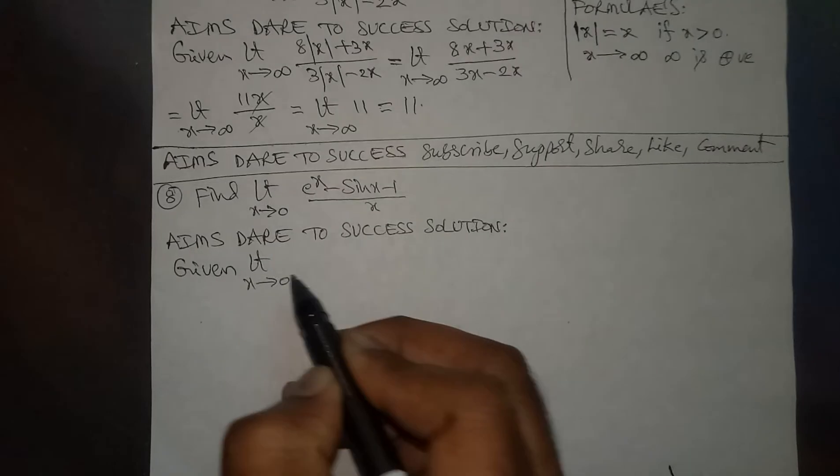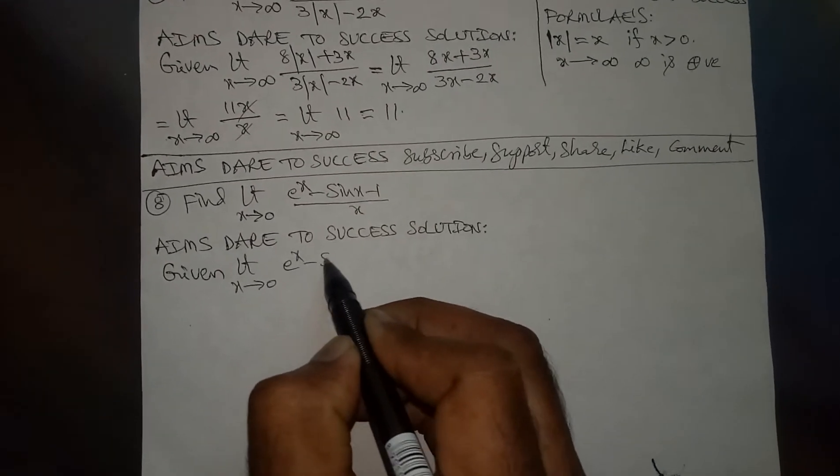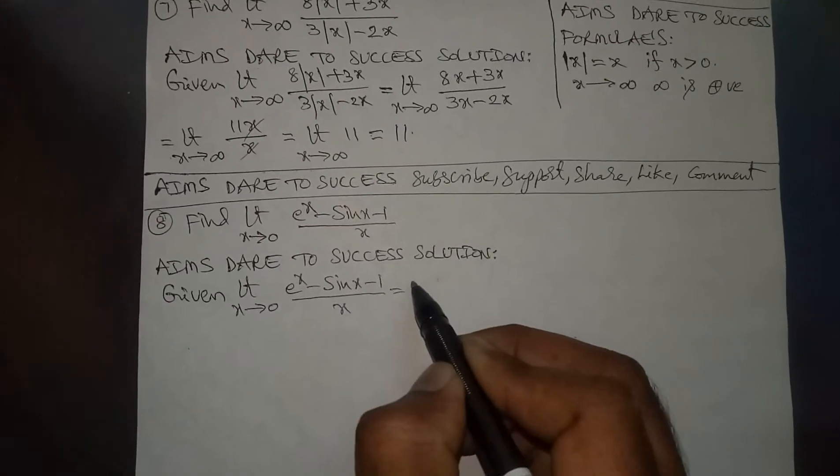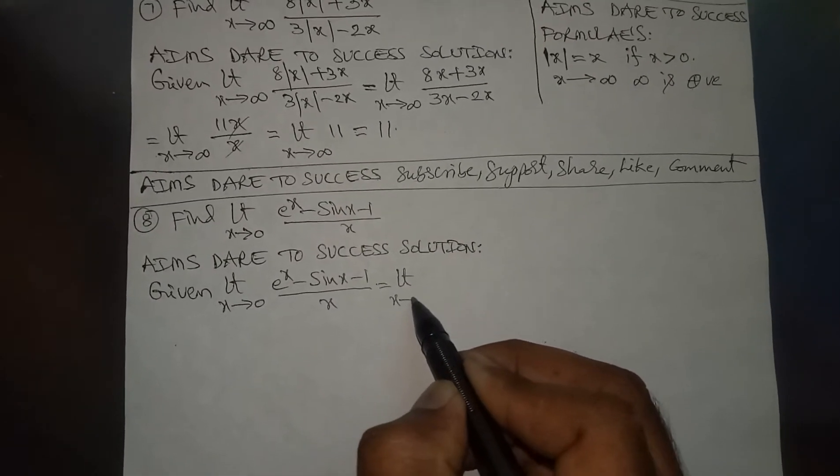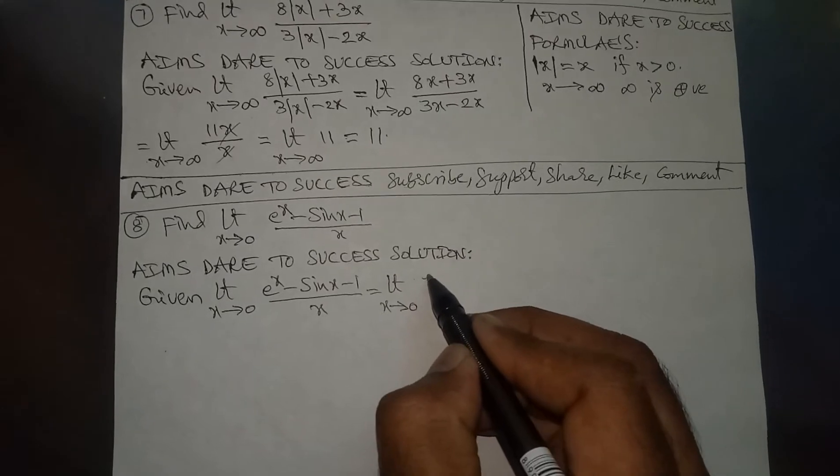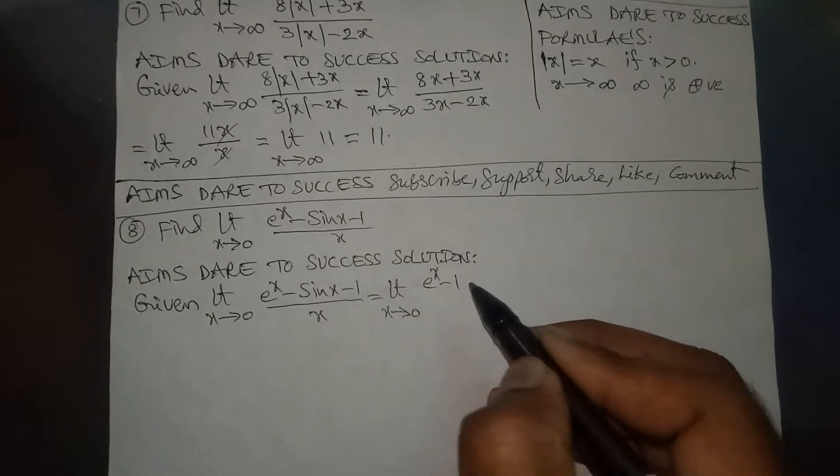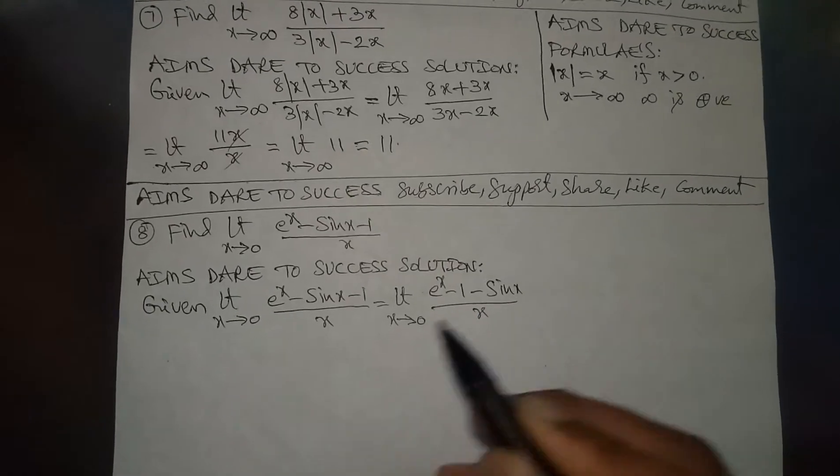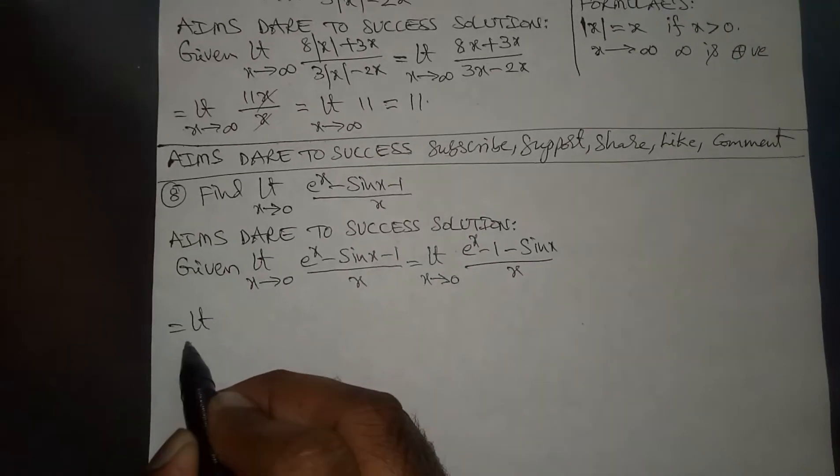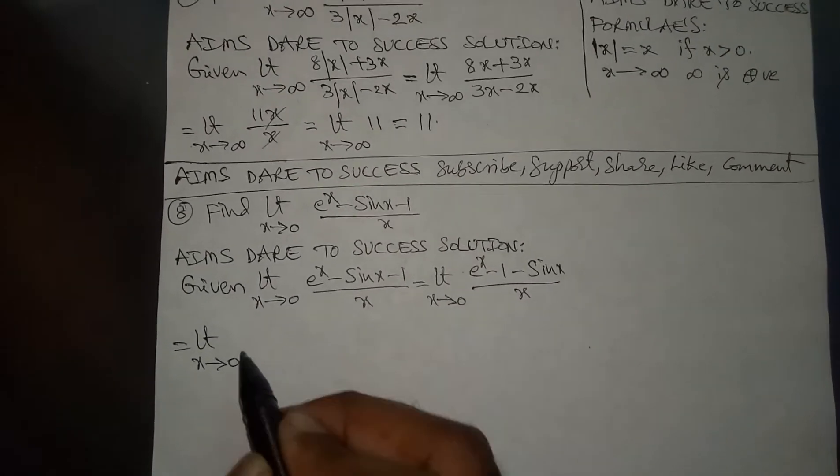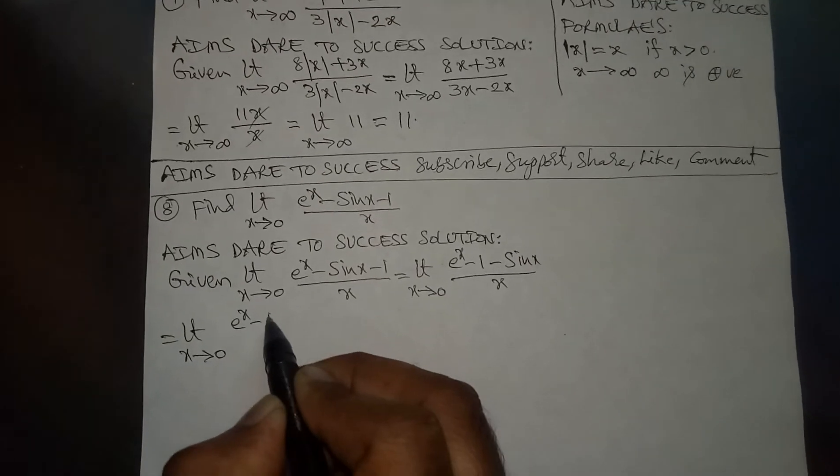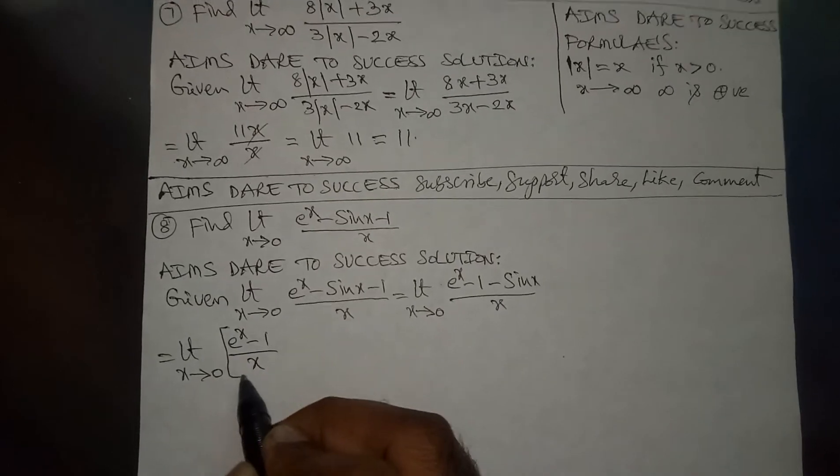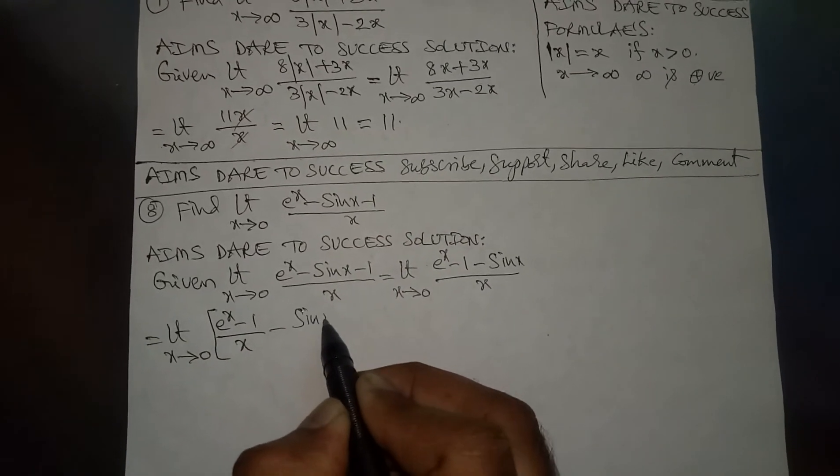So this can be written as related to formula: limit x tends to 0 of (e^x - 1 - sin x) / x. It is limit x tends to 0 of (e^x - 1) / x, splitting the value, after that minus sin x / x.